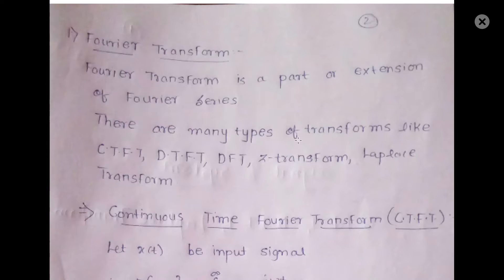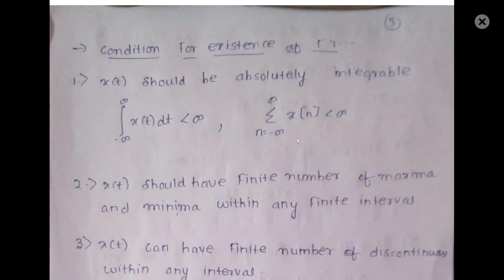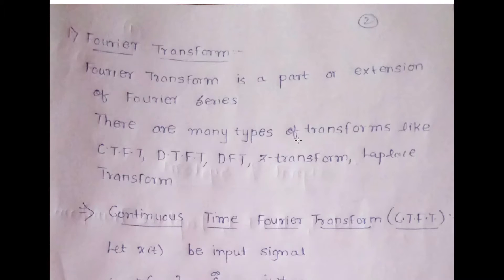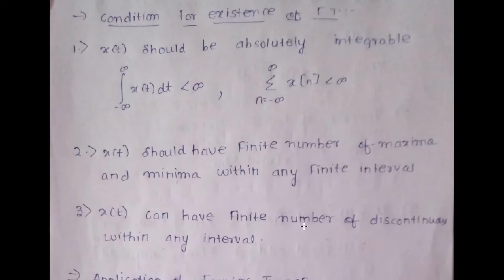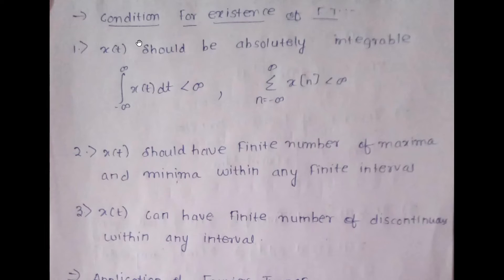An important part is the condition for existence of the Fourier transform. The first condition is that x(t) should be absolutely integrable — that is, the integration from minus infinity to infinity of |x(t)| dt should be less than infinity.